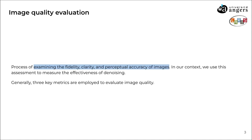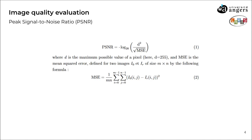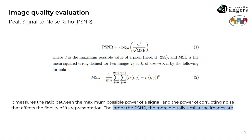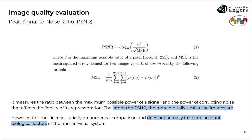Image quality evaluation refers to the process of examining the fidelity, clarity, and perceptual accuracy of images. In our context, we use this to measure the effectiveness of denoising. Generally, three key metrics are employed to evaluate image quality. The first one is the Peak Signal-to-Noise Ratio, or PSNR. It measures the ratio between the maximum possible power of a signal — in this case, the maximum value of a pixel — and the power of corrupting noise that affects the fidelity of its representation. The larger the PSNR, the more digitally similar the images are. The problem with this metric is that it relies strictly on numerical comparison and does not take into account biological factors of the human visual system, so we won't be using this metric.